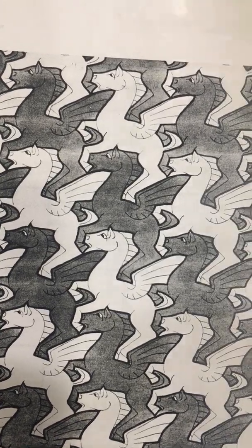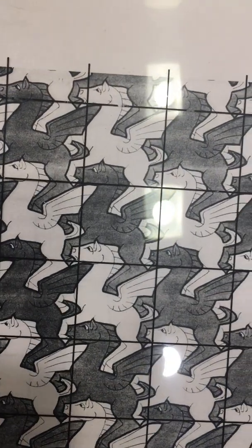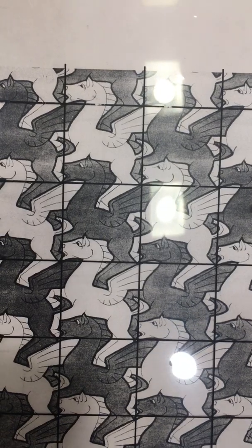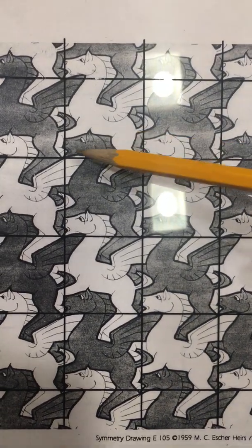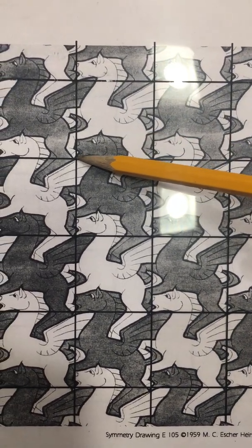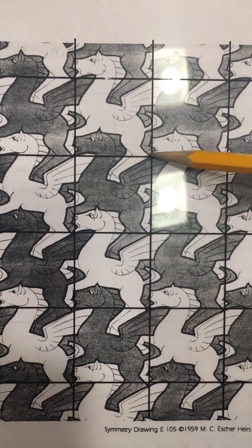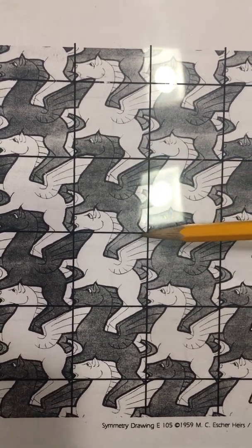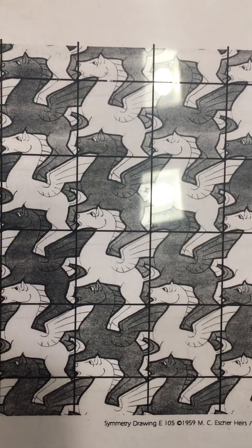I'm going to take those squares and overlay them right on top of this horse tessellation. Do you see how the square goes from the black horse's jaw to the white horse's jaw, down to the black horse's jaw, over to the white horse's jaw?